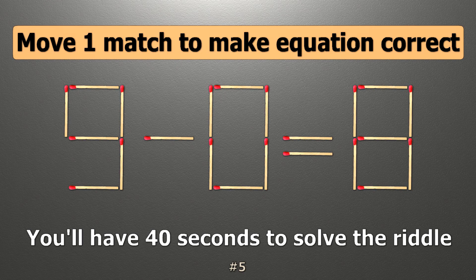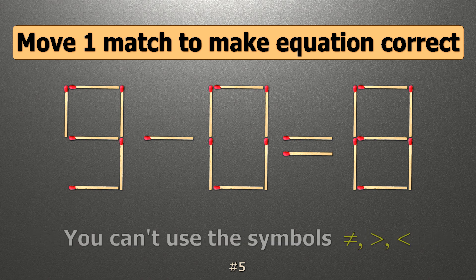We have the equality 9 minus 0 equals 8. Our equality is wrong. We need to move one match to make our equality correct.